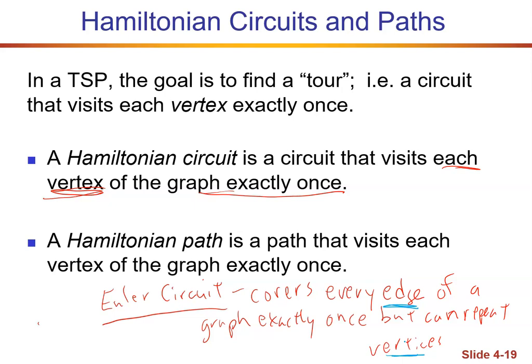A Hamilton circuit covers every vertex of a graph exactly once but cannot repeat edges. A Hamilton path is a path that visits each vertex of the graph exactly once. What's the difference between a circuit and a path? In a circuit, the starting point equals the ending point. In a path, the starting point does not equal the ending point — they are two different points.